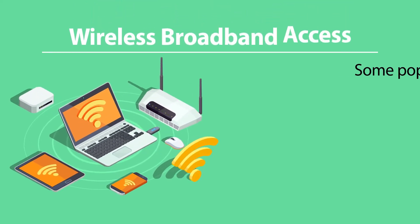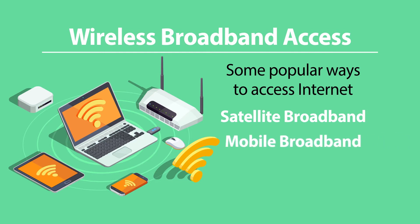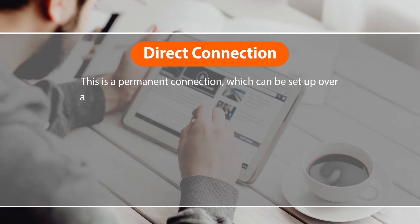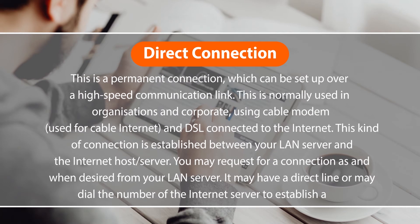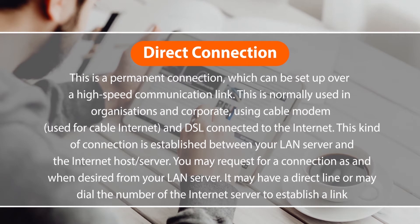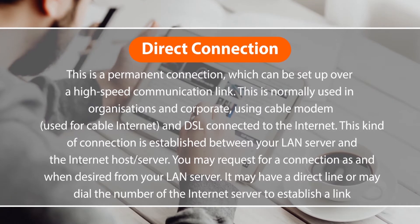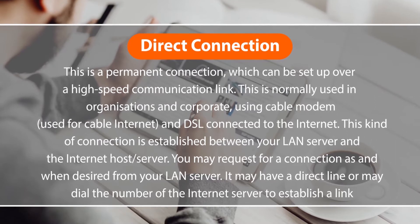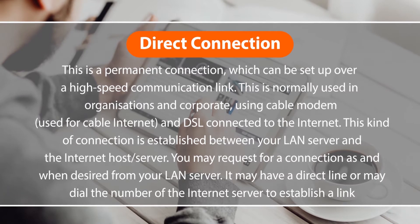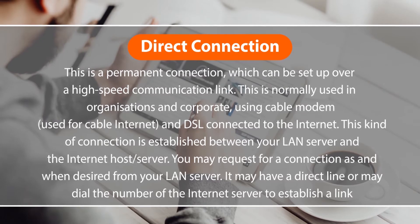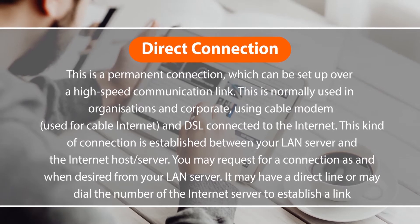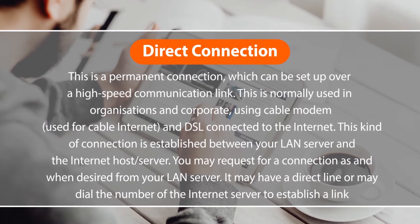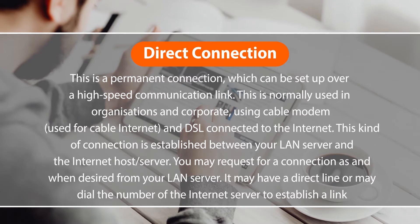For wireless broadband, there are three popular ways: satellite broadband, mobile broadband, and wireless ISP. Now, a direct connection is basically a permanent connection which can be set up over a high-speed communication link. This is normally used in organizations and corporates and uses a cable modem for cable internet as well as a DSL connected to the internet. This kind of connection is established between your LAN server and the internet host or server.